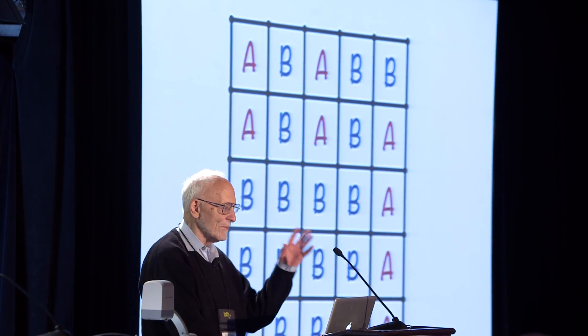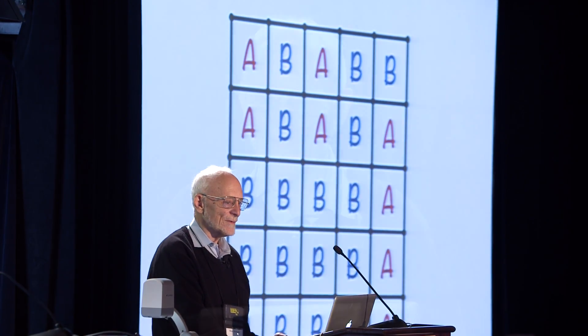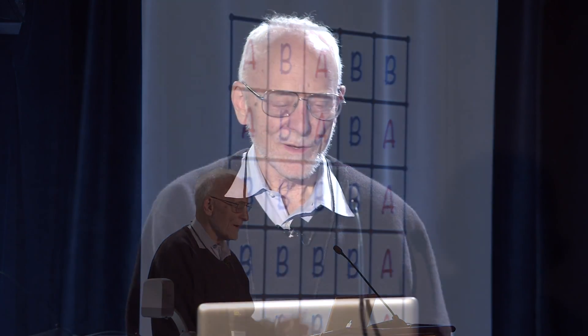This game is called Dots and Boxes. Here's the initial position of a 25 box game. When it's all done, the board will be divided up into 25 squares, and each player will have claimed some squares, and whoever claims the most squares wins the game.